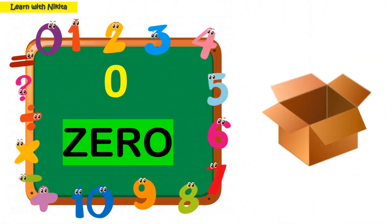This is number 0 and its number name is ZERO. Let's see an example related to the number 0. Here you will see a box and it has no object — it means ZERO objects.